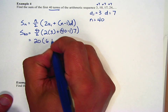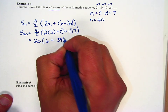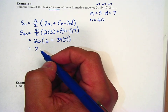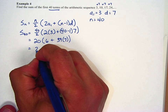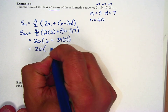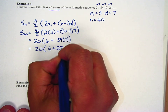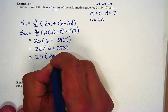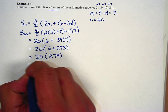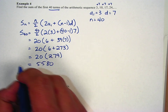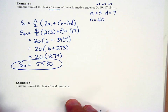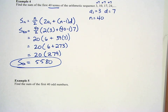Simplifying: 6 plus 39 times 7 gives 6 plus 273, which is 279. Then 20 times 279 equals 5,580. So the sum of the first 40 terms is 5,580. We'll use that formula over and over again in our next examples.